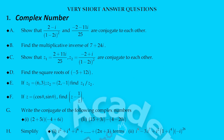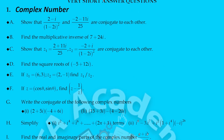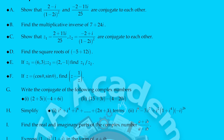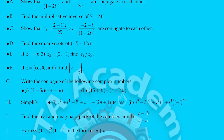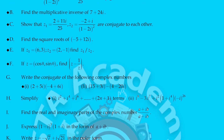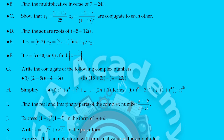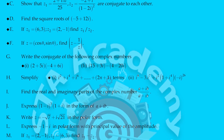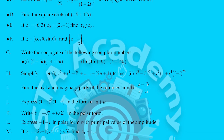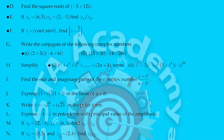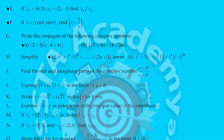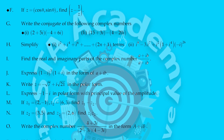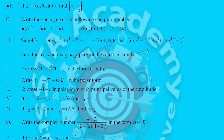Let us start first with VSAQs. We know that VSAQs carry two marks. The first chapter is complex numbers. I have given A to P questions. These are very important questions. I have also marked the important questions so that you can see A to F. If you practice all these questions, you will definitely get two marks in complex numbers.